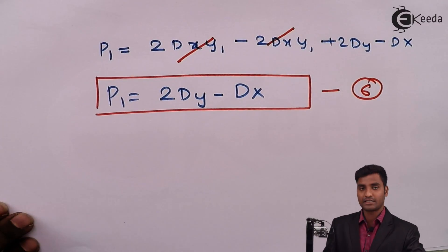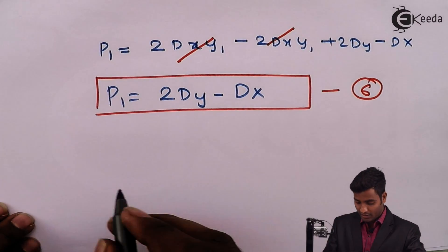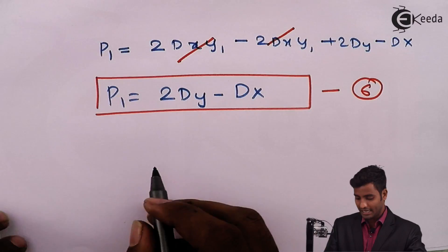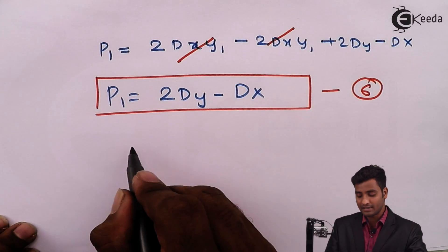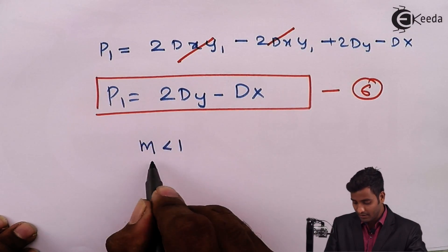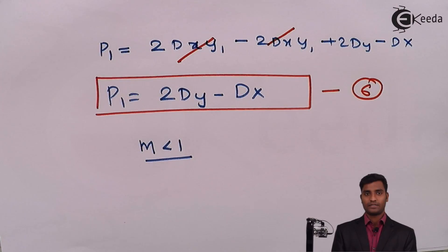I have successfully written down the explanation for Bresenham's algorithm for m less than 1. Thank you.